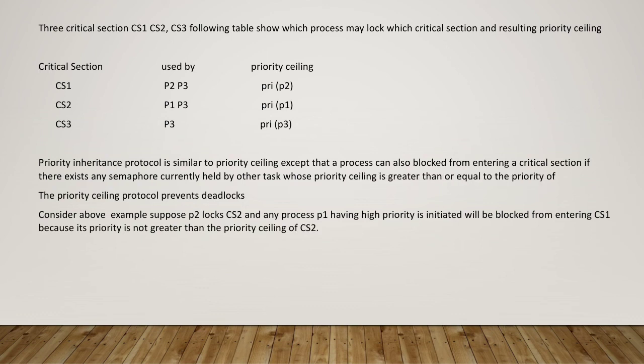The priority ceiling protocol is similar to priority inheritance, except that a process can also be blocked from entering a critical section if there exists any semaphore currently held by some other task whose priority ceiling is greater than or equal to the priority of P1. The priority ceiling protocol prevents deadlocks.